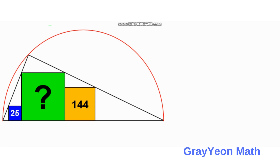Welcome to GrayonMath. We are asked to solve for this problem — we have to find the area of the green square. The given squares are: the blue square is 25 square units and the orange square is 144 square units, and it is inscribed in a triangle which is inscribed in a semicircle.